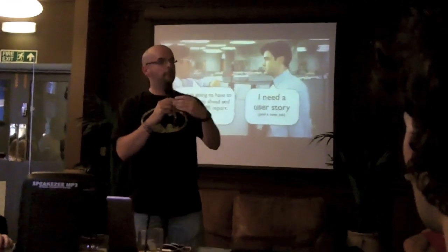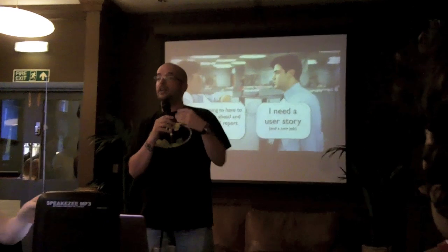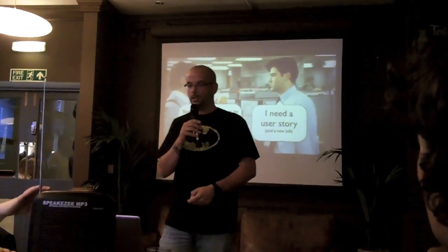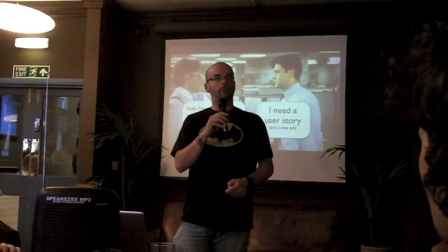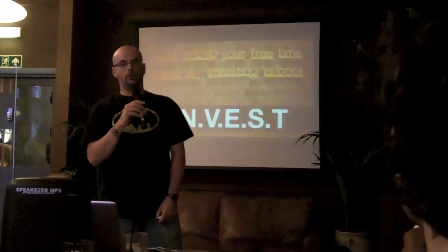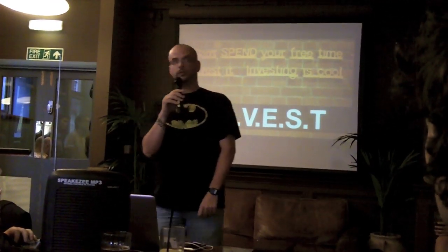So it gets better defined, and we might split it up into other stories. If that's not possible, we might do a sprint zero or iteration planning. The best way to write a user story is to use the following acronym: INVEST. It should be Independent, Negotiable, Valuable, Estimable — which is a real word, I'm told — Small, and Testable.